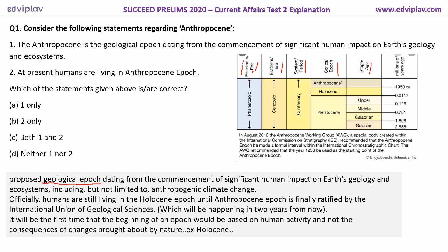In this Quaternary period, a new epoch called Anthropocene was proposed by the Anthropocene Working Group (AWG) of the International Commission on Stratigraphy (ICS). This Anthropocene Working Group proposed for a new epoch — that is the Anthropocene epoch.